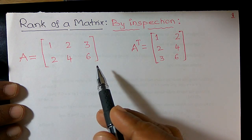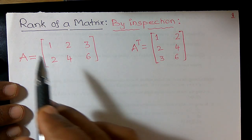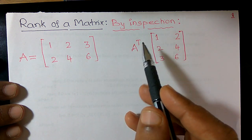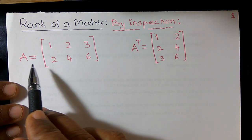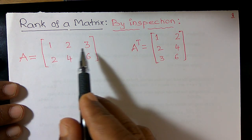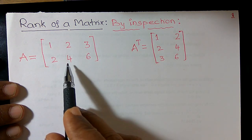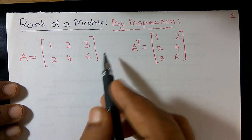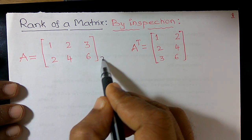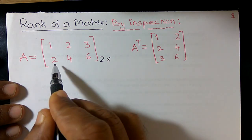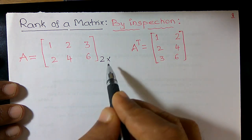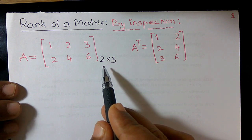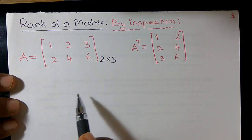Hello friends. Here you can find out the rank of a matrix by inspection. It is given that A is equal to 1, 2, 3, 2, 4, 6. This matrix contains 2 rows and 3 columns, meaning the order of this matrix is 2 cross 3.